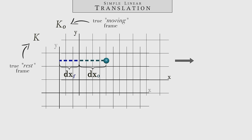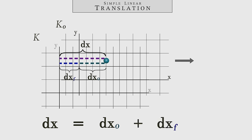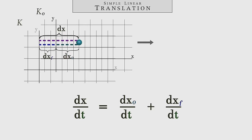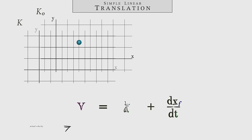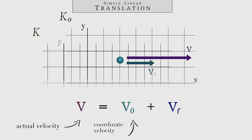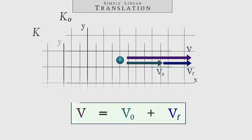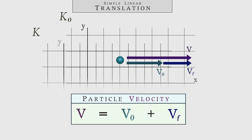Within K0 is a particle that, over a small amount of time, traverses a distance of coordinate units, while the entire K0 frame itself traverses a distance of units in the K frame. It should be fairly apparent that the actual distance traveled by the particle equals the coordinate distance it traveled within the K0 frame, plus the distance traveled by the K0 frame itself. By dividing through by dt, the velocity of the particle is simply equal to its coordinate velocity plus the frame velocity.